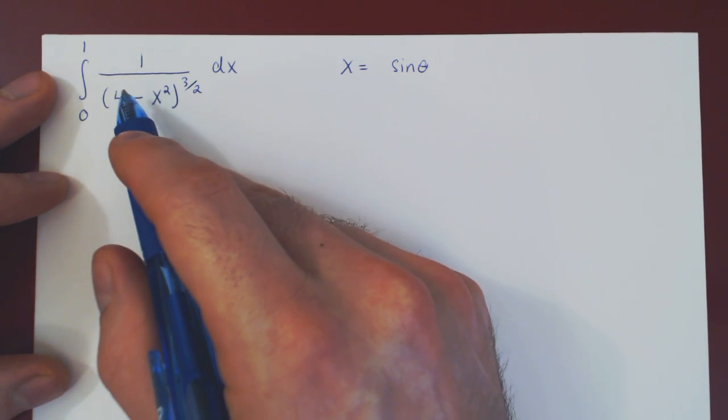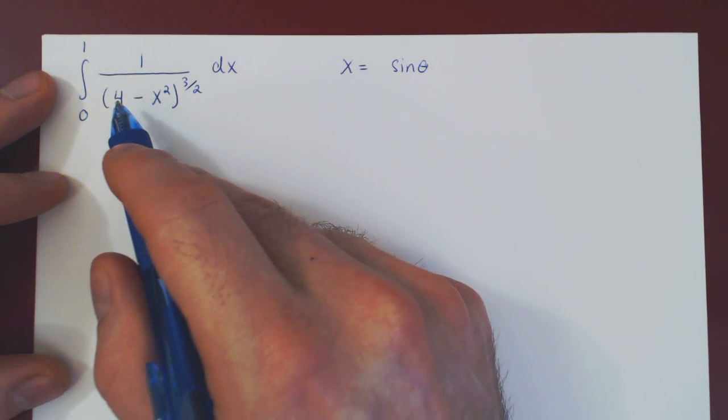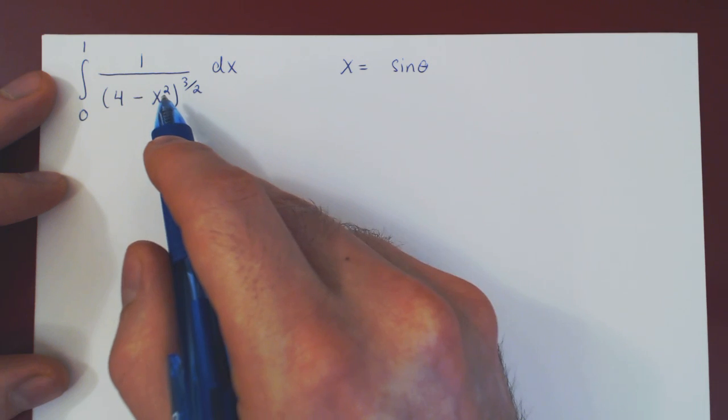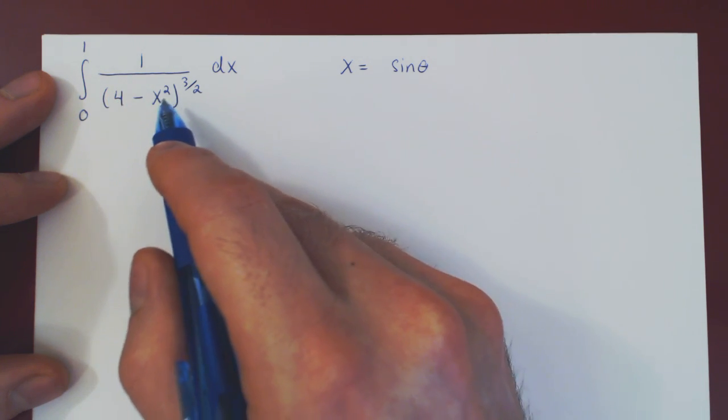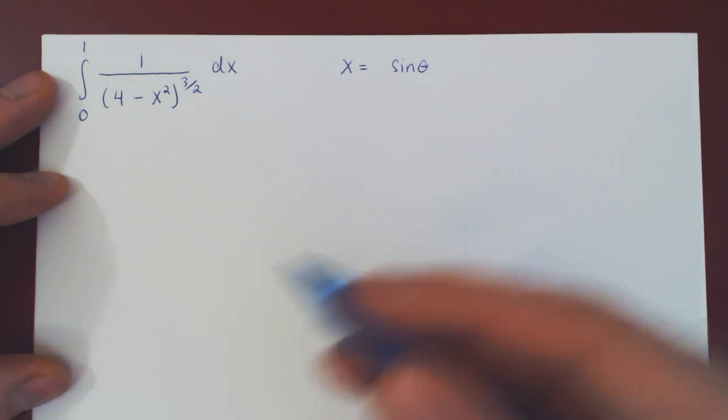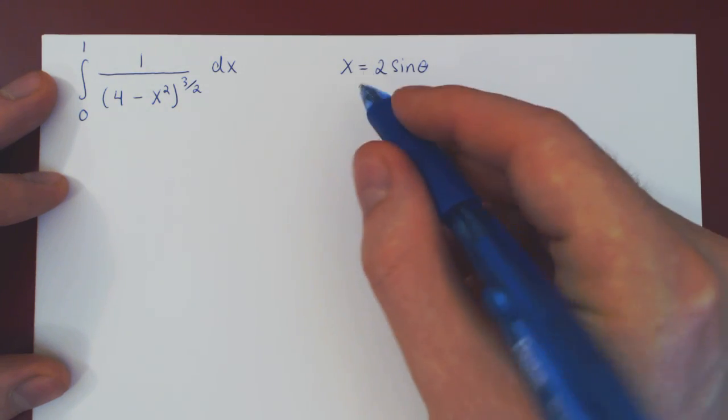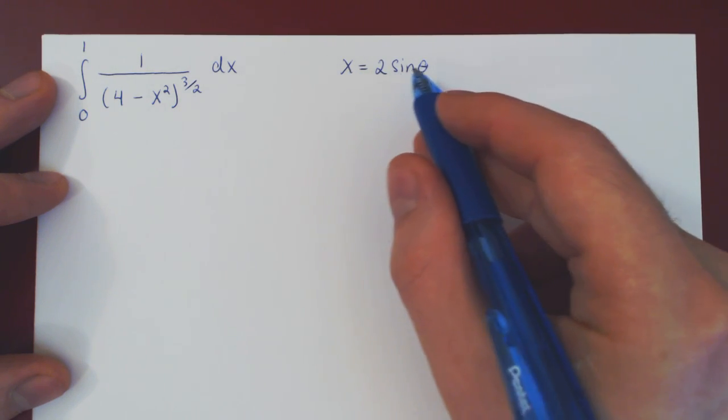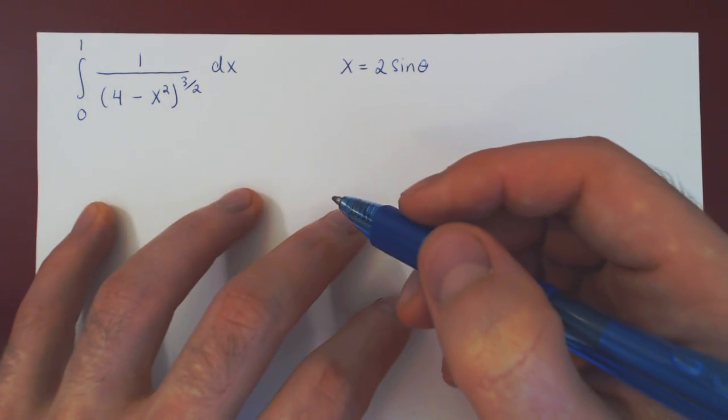Well, how can we get rid of this 4? Well, if in the x squared, there was a factor of 4 also, then we could factor 4, and we'd have 1 minus sine squared. Well, what squared gives 4? The answer, of course, is 2. And so now our choice is not simply x is sine theta, but x is 2 times sine theta. So let's see what happens now.